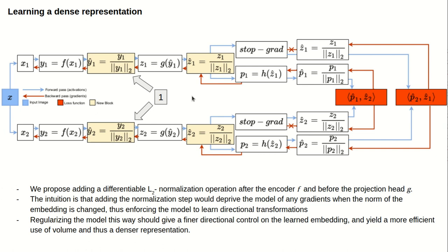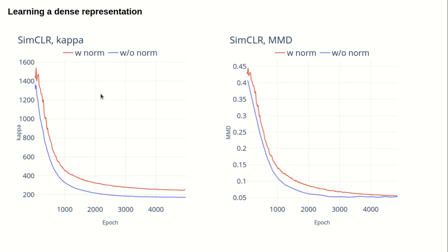Our first proposed modification is adding a differentiable L2 normalization after the encoder. The intuition behind this is to force the model to differentiate between samples directionally and not just by using a different norm, which helps increase the concentration of the distribution. We can see that after adding the normalization, the learned distribution represented by the red curve is much more dense, and this is maintained all through training.